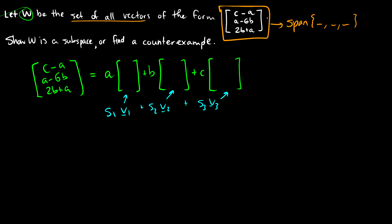Rearranging: the first row is −A + C, the second row is A − 6B, and the third row is A + 2B. Looking at the A column, we have (−1, 1, 1). For the B column, factoring out B gives (0, −6, 2). For the C column, factoring out C gives (1, 0, 0).